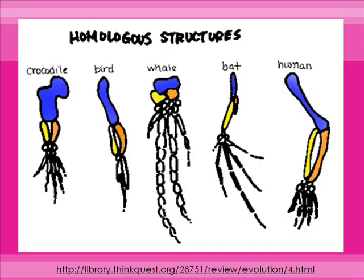One of my favorite homologous structure examples is the limbs of animals. Here you can see five different animals: a crocodile, a bird, a whale, a bat, and a human. Each of these organisms has limbs — crocodiles have legs, birds have wings, whales have flippers, bats have wings, and humans have arms and legs. This picture shows that the blue bones are all very similar.